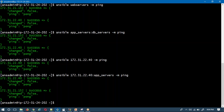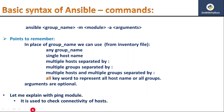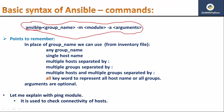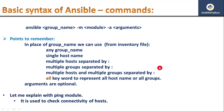To summarize: the ping module is used to check connectivity. Remember the syntax — ansible, then either a group name, host names, multiple group names, multiple host names, or a combination of group names and host names, then -m for your required module based on your task, and optionally -a for arguments. This is the basic introduction to Ansible commands.